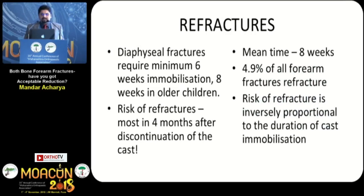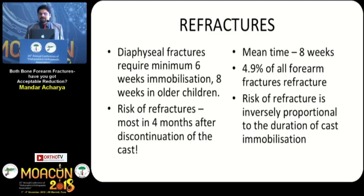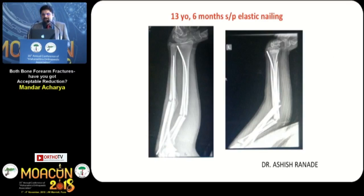Another problem is refracture. Diaphyseal fractures require a minimum of six weeks of immobilization, and eight weeks in older kids. The risk of refracture is highest in the first four months after cast removal, with a mean time of refracture of about eight weeks. It has been documented that 4.9% of all forearm fractures will refracture within these four months. Risk of refracture is inversely proportional to duration of cast immobilization.